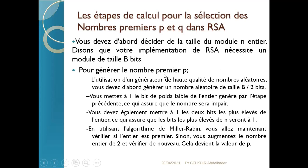L'étape pratique pour mettre en œuvre RSA consiste d'abord à choisir la taille du module N. En général, cette taille est exprimée en bits, car au niveau machine tout est binaire. N est déduit de P et Q. Si je dis que la taille de N est B bits, pour choisir P et Q cela veut dire que P doit avoir une taille de B/2 bits ainsi que Q, puisque P et Q sont du même ordre de grandeur. On commence par le choix des nombres premiers.